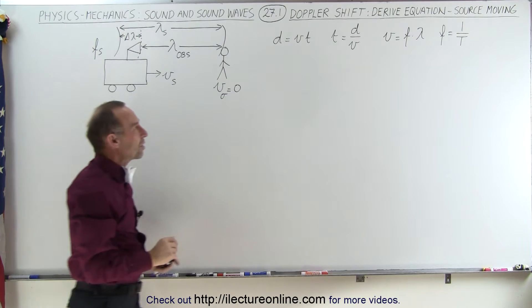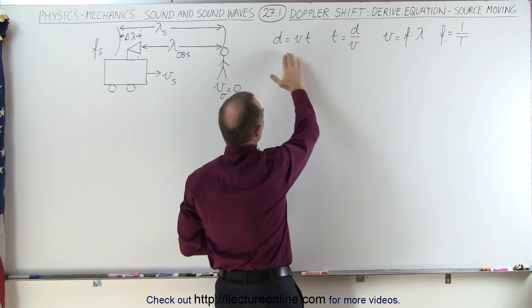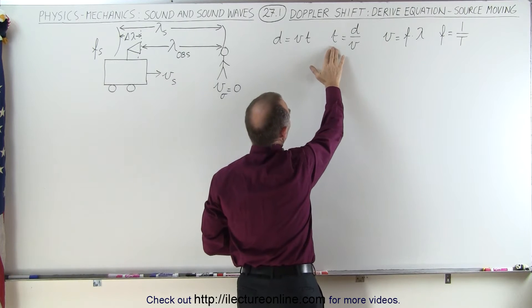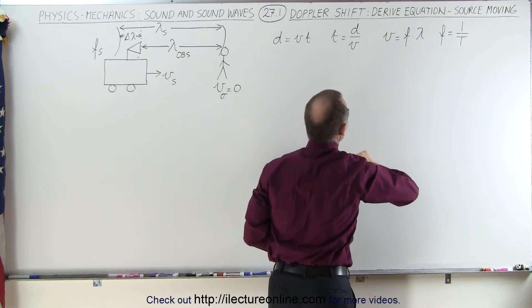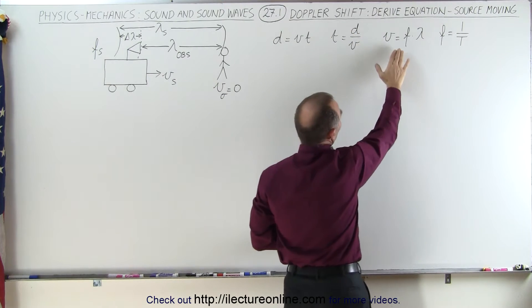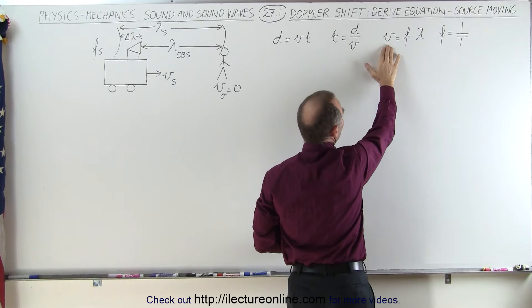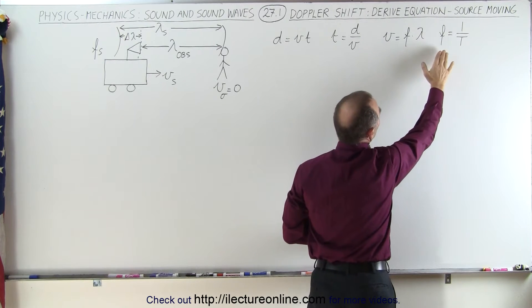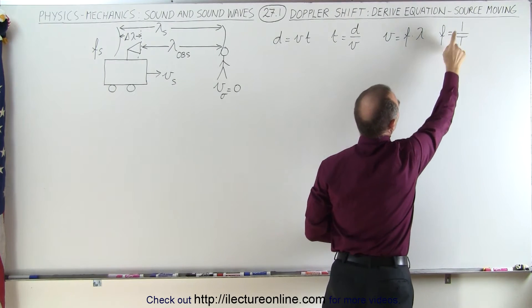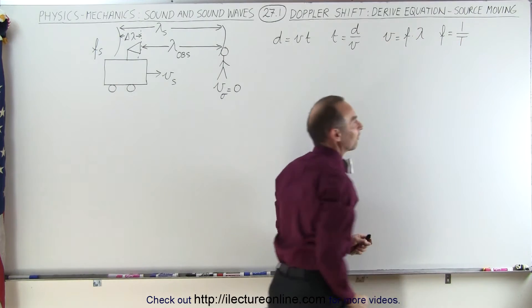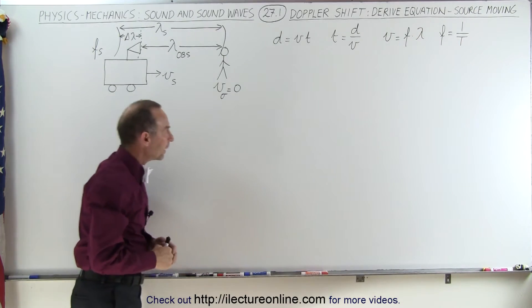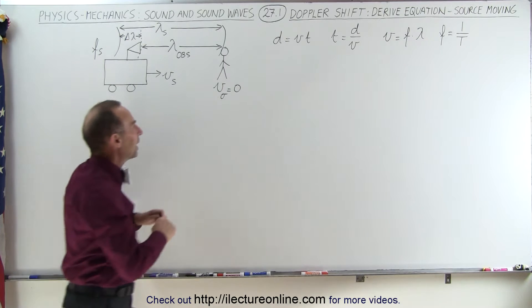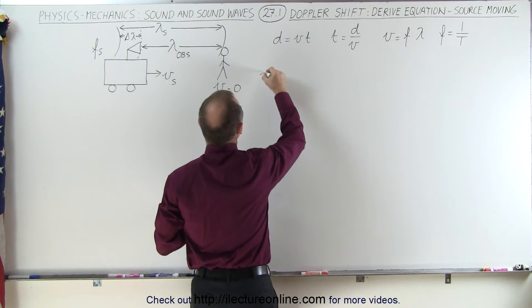We're going to use some equations here, so that's why we put them on the board: distance equals velocity times time, so time equals distance divided by velocity. We have the wave equation where the velocity of a wave equals frequency times wavelength, and we also know that frequency equals the inverse of the period. Knowing all that, let's try to find a way to come up with an equation.